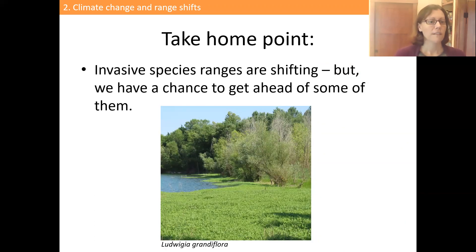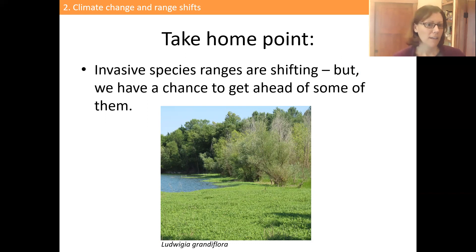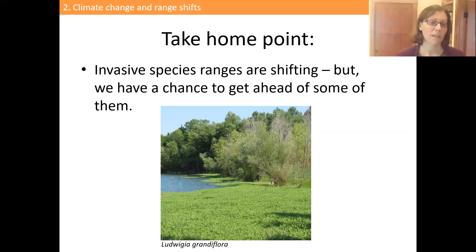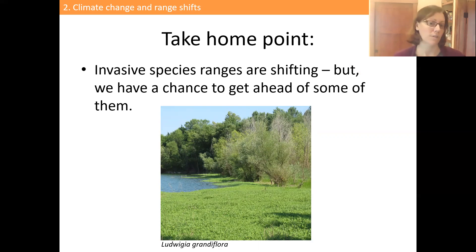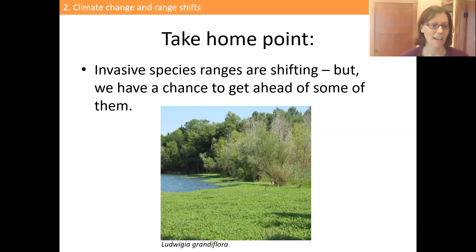The take-home point on range shifts is that invasive species ranges are shifting, but what's cool is that knowing the landscape of weedy species across the US means we can actually know the identity of species coming in ahead of time. That gives us a chance to get ahead of some of them — putting them at the top of early detection and rapid response lists, or potentially placing them on the regulatory list if they're sold as ornamental plants. This is the silver lining of climate change: the chance to be proactive and know what's coming.